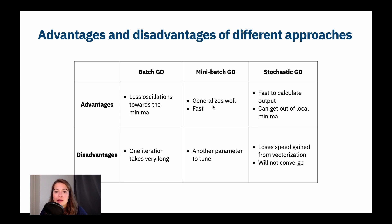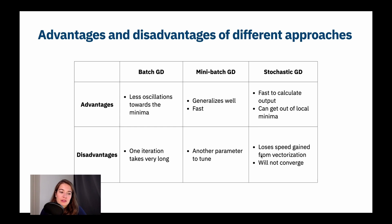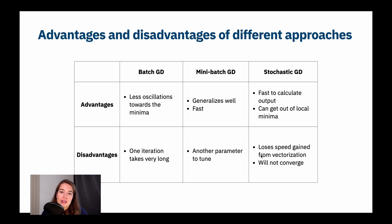Mini-batch is fast because you're giving many examples — not all, but more than one — so you can still use vectorization. The one downside of mini-batch gradient descent is that it introduces another hyperparameter to tune: you have to decide what mini-batch size to use.